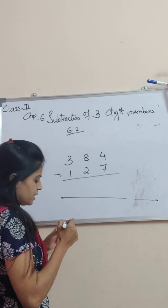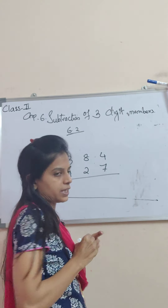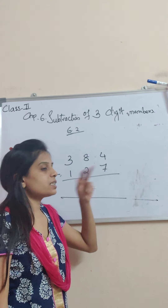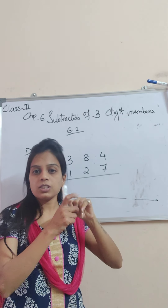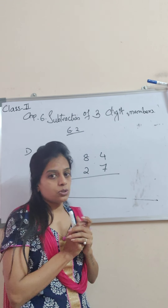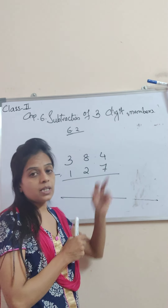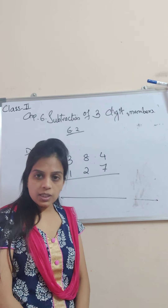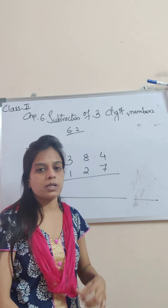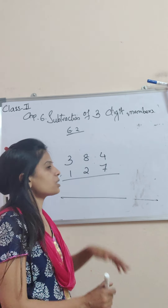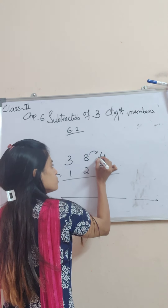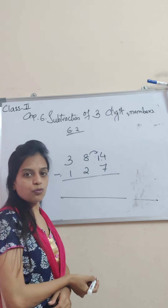Now, children, again subtraction starting from one's place. As you can see, 4 minus 7 — from 4, we cannot take out 7. Because the upper number is smaller. Toh chote number mein se bada number ham nahi cut kar sakte. So in this case, what we do? We borrow 1 from here. So when we are borrowing, it becomes 14.